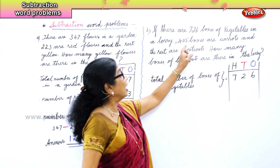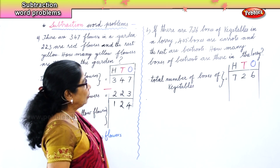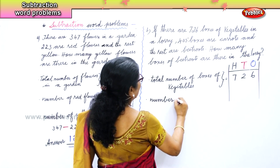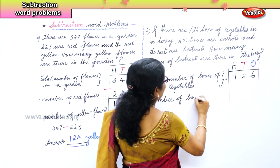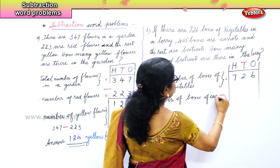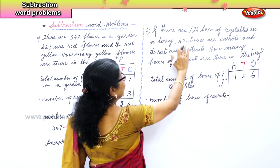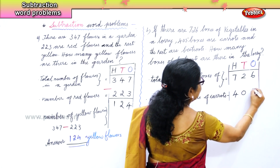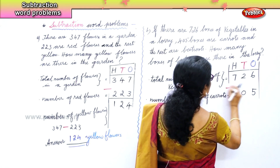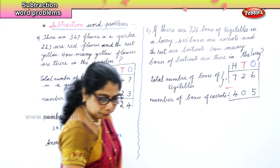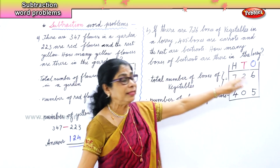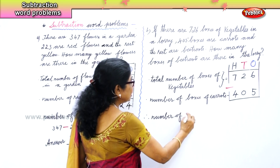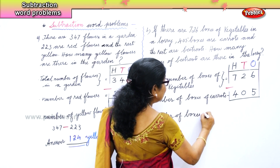The next statement: 405 boxes are carrots, so we write: number of boxes of carrots. The number is 405. Therefore, number of boxes of beetroots is what we are asked to find out.